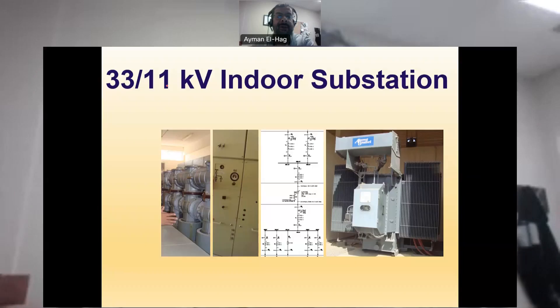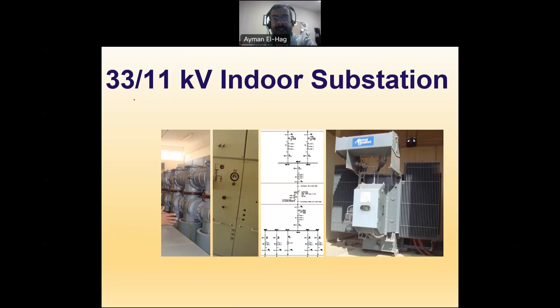In this video, we will talk about one kind of distribution substation, a specific type that's used in several countries, which steps down the voltage from 33 kilovolt to 11 kilovolt. This substation is an indoor type, meaning that the whole system or all equipment are inside a building, as opposed to an outdoor substation where you have the different components exposed to environmental conditions.